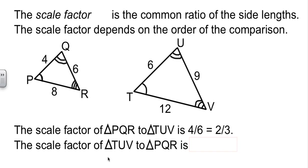Now, if they ask me in the other order, TUV to PQR, now I would have to go six to four, which reduces to three-halves. Notice they look a lot alike, but they're reciprocals of each other because the order of which one came first dictates which way you write the scale factor. Just make sure you're aware of that.